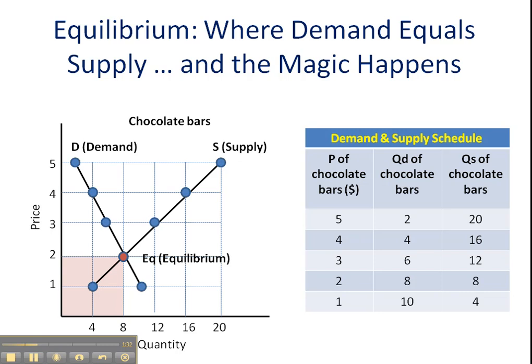That $2 is going to be the market price of chocolate bars — for you and me, that's what we're going to be paying. For consumers, that's the price that they're going to be selling at. The shaded area you see here is a revenue box, and that's how we can figure out what the market sales would be. We take the $2 price of chocolate bars and multiply by the 8 units that were sold, for a total of $16. So our market revenue here would be $16, and that $16 would be shared among the firms that are a part of our market supply curve.